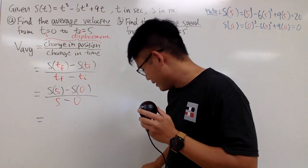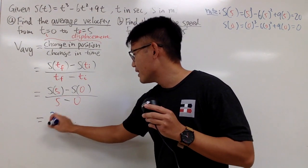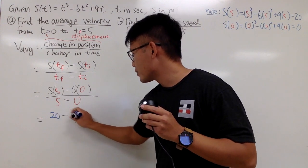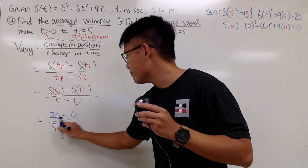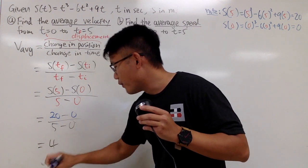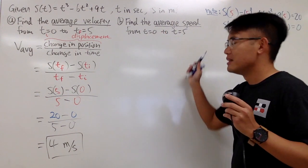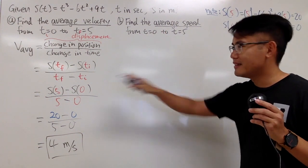And let's also put down s of 0. s of 0 is the nice number 0. So you can see that this is just 20 minus 0 over 5 minus 0. Work this out, you just get 4. Before I do this, take a guess. Do you think that the average speed is easier or harder than that?